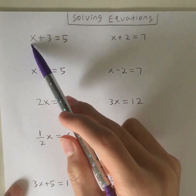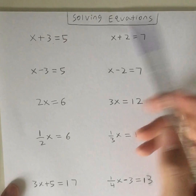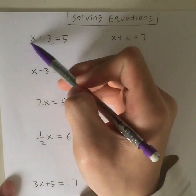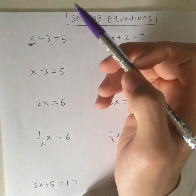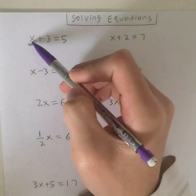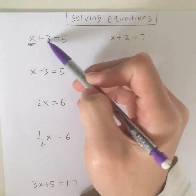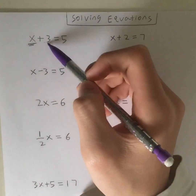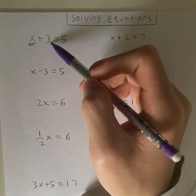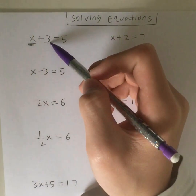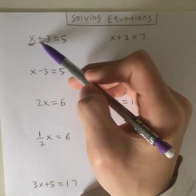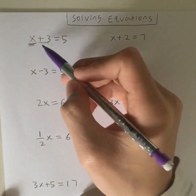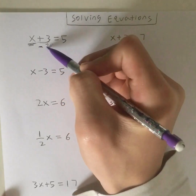You're given the question x plus 3 is equal to 5. How would you solve for x? The question is asking to solve for x, so what you need to do is take away this 3. What's the opposite of 3? Whenever you're solving equations, you have to do the opposite operation. So what's the opposite of plus 3? It's minus 3. So you're going to subtract 3 on both sides.